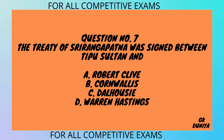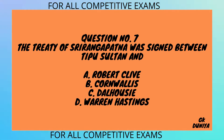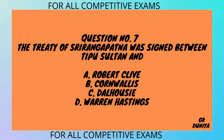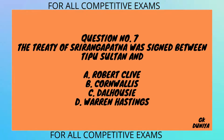Question No. 7. The Treaty of Seringapatam was signed between Tipu Sultan and: A. Robert Clive, B. Cornwallis, C. Dalhousie, D. Warren Hastings.